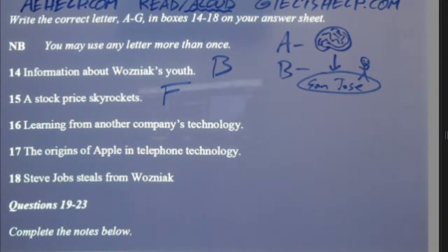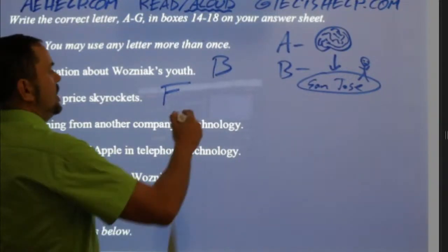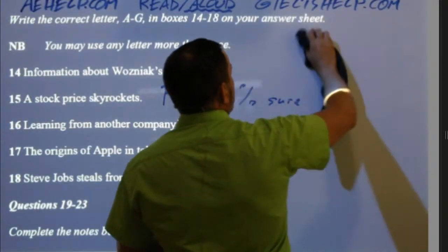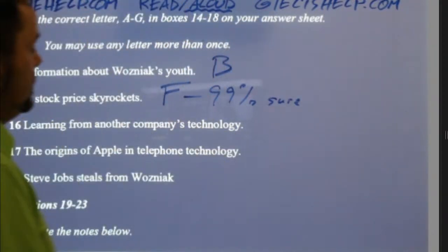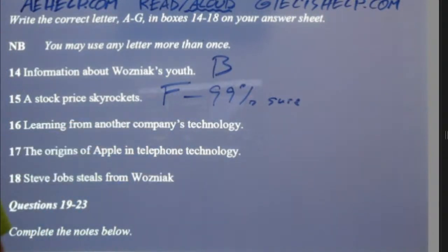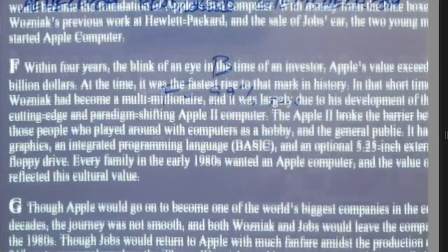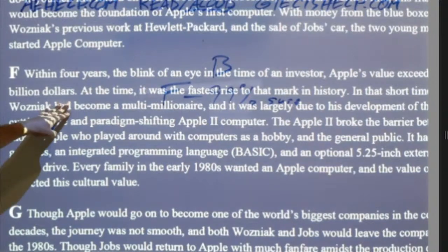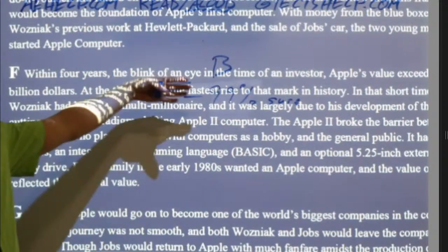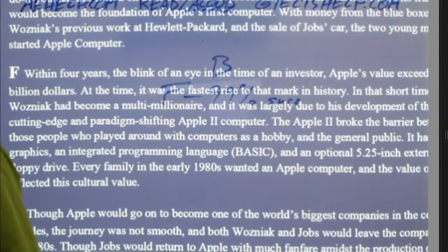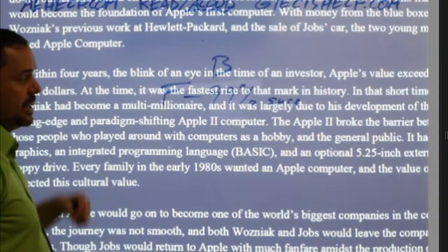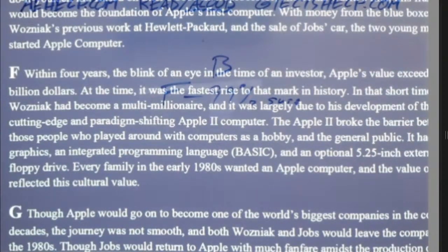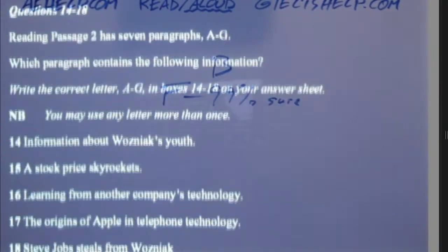In the official exam, if you're like 90% sure, you can quickly check to close that 10% — it will only take a couple of seconds. So when you're 90% sure, you check. Within four years, the blink of an eye in the time of an investor, Apple's value exceeded a billion dollars — the fastest rise to that mark in history. Now you're 100% sure. So that one is F.